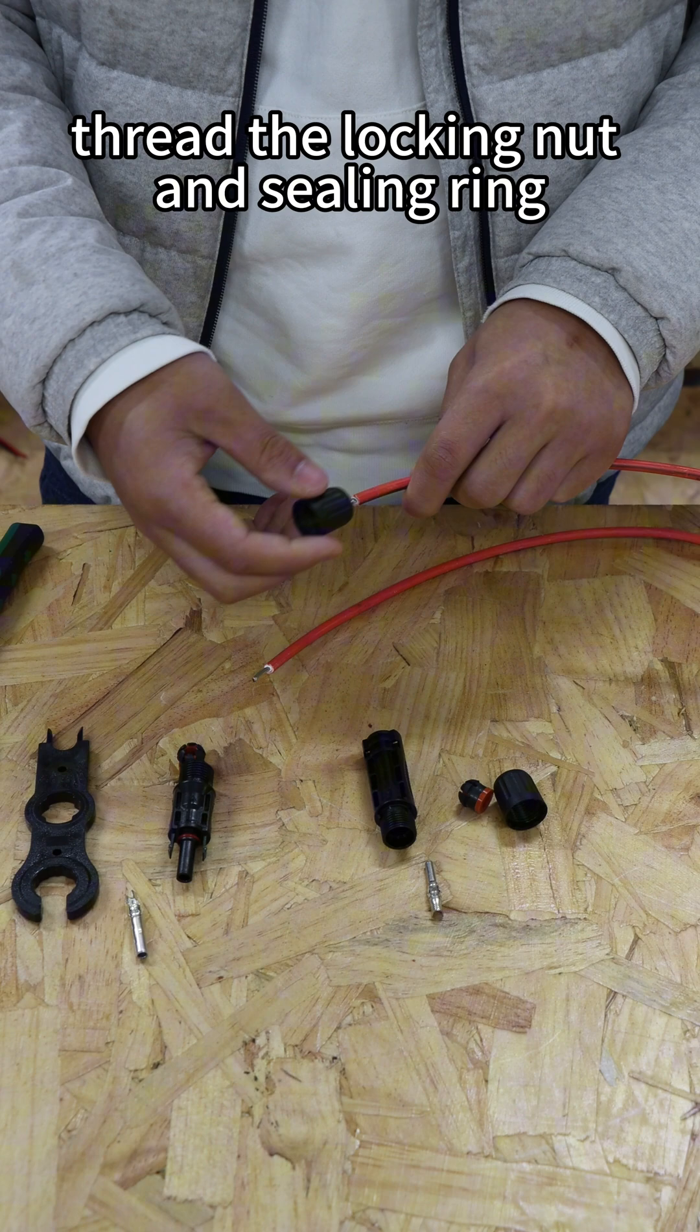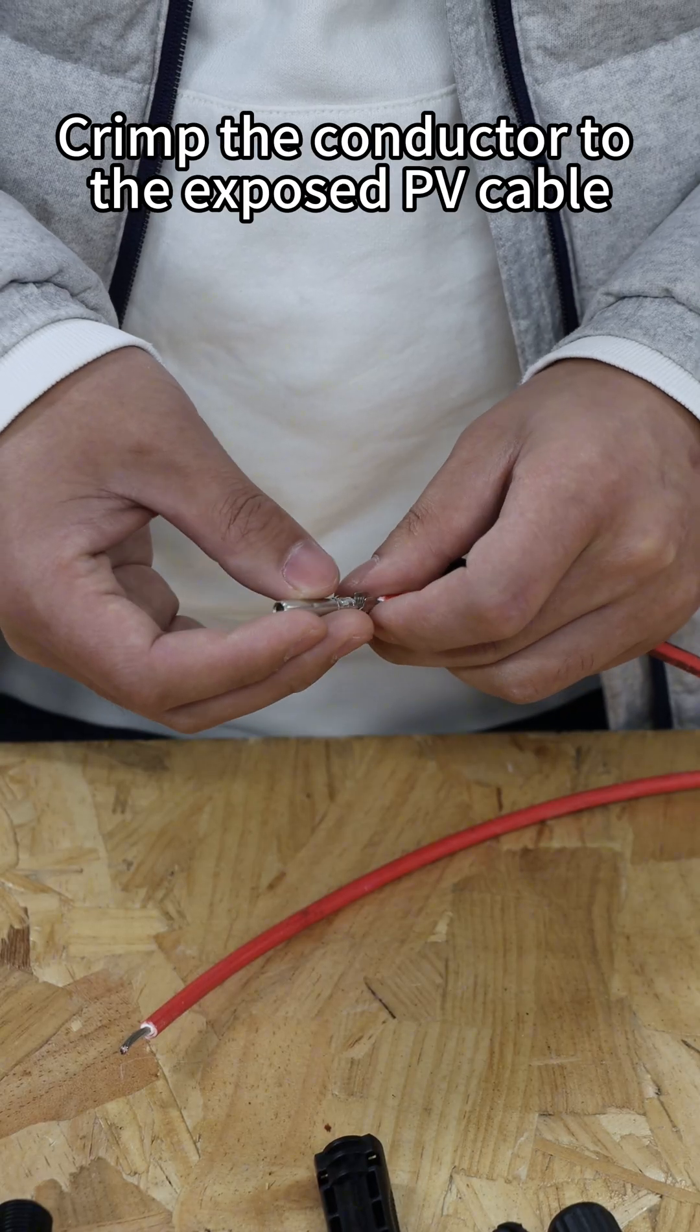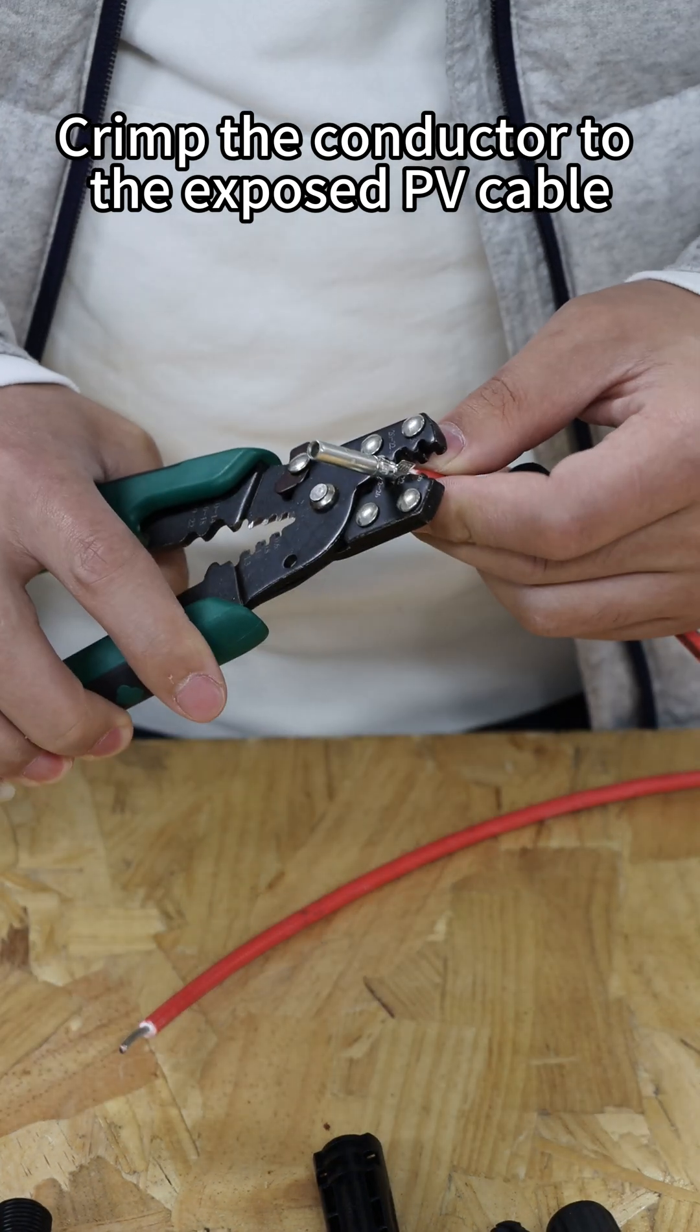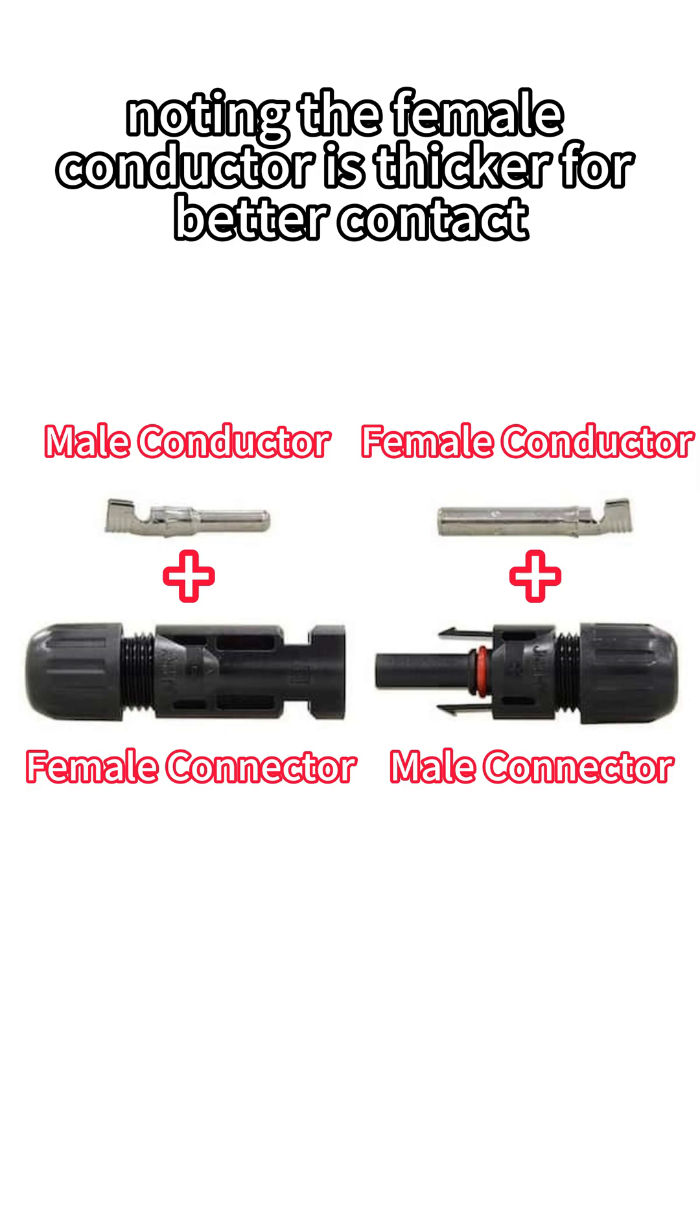For the male connector, thread the locking nuts and sealing ring onto the cable. Crimp the conductor to the exposed PV cable, noting the female conductor is thicker for better contact.